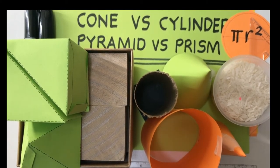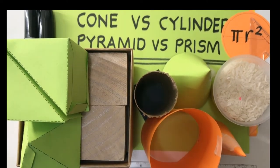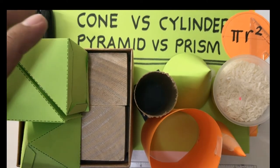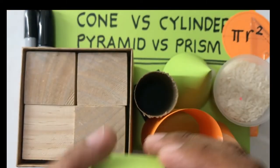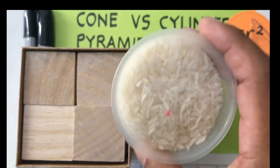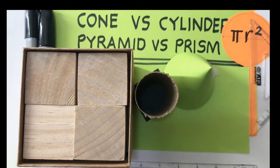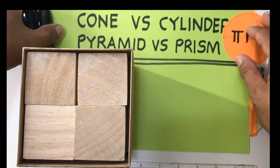So in this lesson, I am going to share with you the technique that I use to remember some of the formulas. Specifically, we are going to talk about the volume of a cone versus a cylinder, and the volume of a pyramid versus a prism. To do that, we are going to start with some activity. I have some cut-out materials, and also some rice, which we are going to use later.